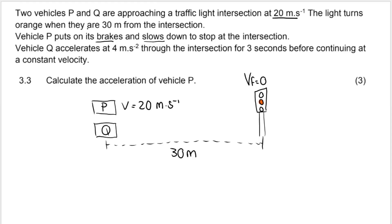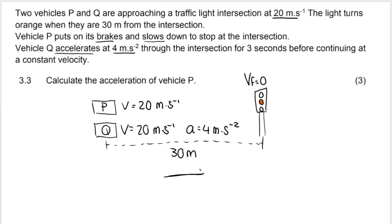Vehicle Q decides to go through the light quickly and accelerates at 4 meters per second squared. So vehicle Q is speeding up — although it has an initial velocity of 20 meters per second, when the light goes orange it accelerates at 4 m/s² in the positive direction, doing this over a period of three seconds before continuing at a constant velocity.